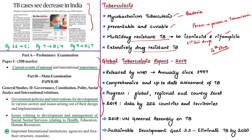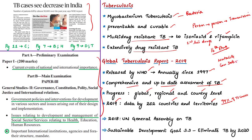The Global Tuberculosis Report is released by the World Health Organization every year since 1997. Its purpose is to provide a comprehensive and up-to-date assessment of the TB epidemic and progress in response at the global, regional, and country levels. In 2019, data on tuberculosis were reported by 202 countries and territories, accounting for more than 99% of the world's population. The report covers trends in TB incidence, mortality, case detection, treatment results, MDR-TB, HIV-associated TB, and TB prevention.